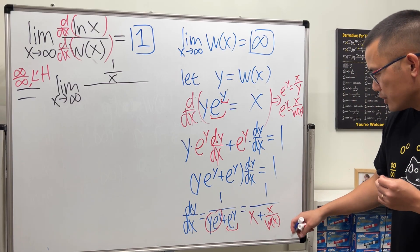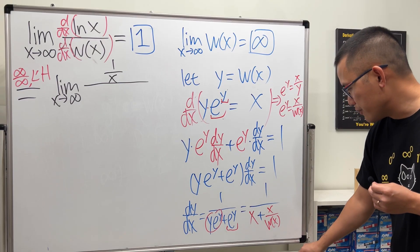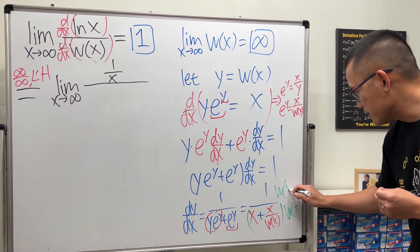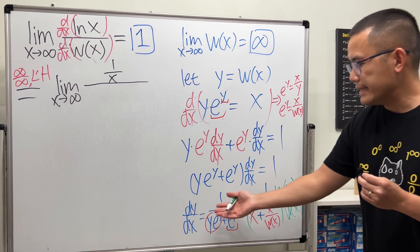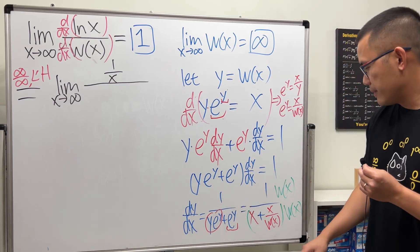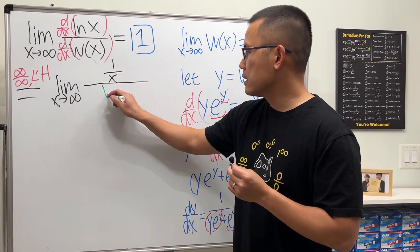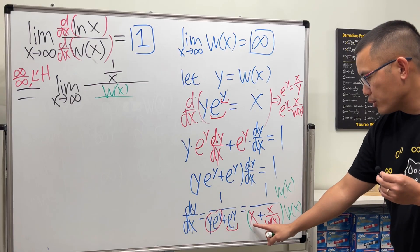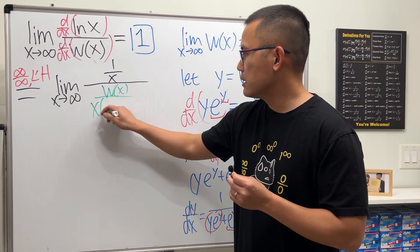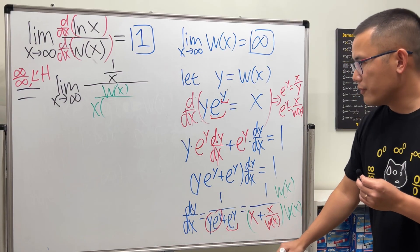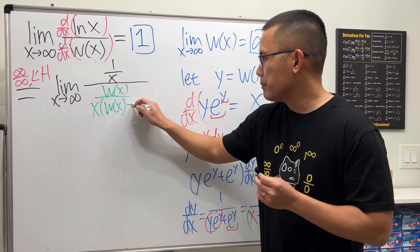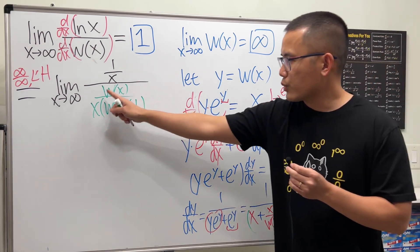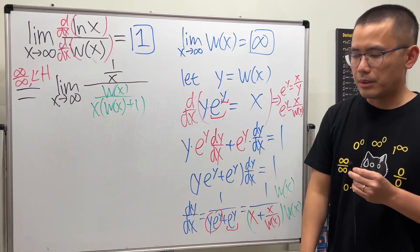Multiplying the numerator and denominator by W(x): dy/dx = W(x) / (x·W(x) + x). Factoring x from the denominator: dy/dx = W(x) / (x·(W(x) + 1)). So the derivative of the Lambert W function is W(x) / (x·(W(x) + 1)). This is the green expression — the derivative of W(x) — which we now substitute back into our L'Hôpital expression.